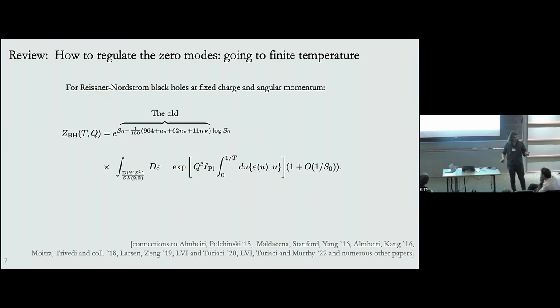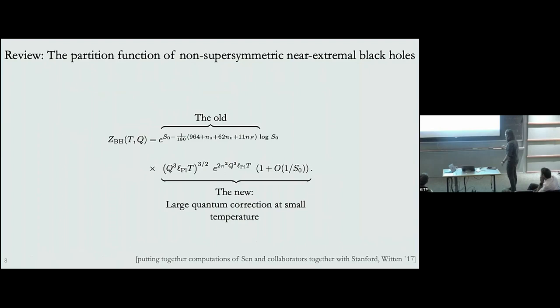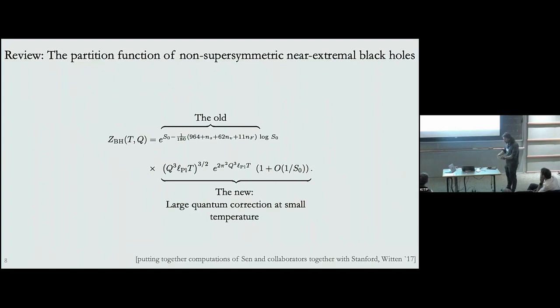It's a strongly coupled quantum mechanics and you have to solve it exactly. Luckily, Stanford and Witten solved it exactly and found that it's one-loop exact, which drastically simplifies the problem. The one-loop correction is proportional to T^(3/2). So in addition to the old piece with logarithmic corrections in the entropy depending on the area, we have a new one-loop correction that depends on temperature, and in the limit when temperature goes to zero this partition function receives a very large quantum correction from this term.